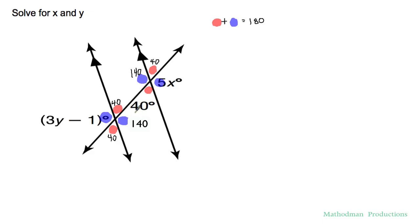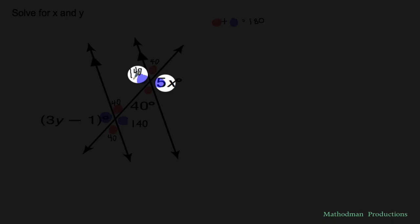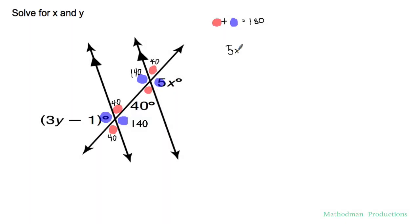I can just solve this letter by letter. To set up an equation to solve for x I can set 5x equal to 140 because those two are congruent. 5x equals 140. Simple equation I can just divide both sides by 5 and I get x equal to 28.